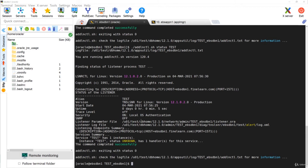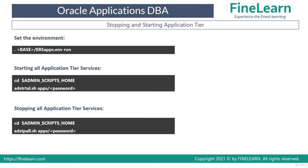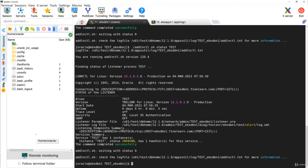Now let's go to the application tier. Once you set the environment — which is ebsapps.env run — you go to admin scripts home and run adstartall.sh. For stopping services you run adstopall.sh.